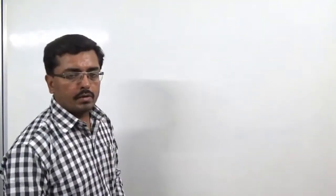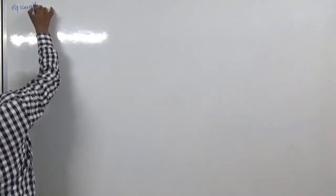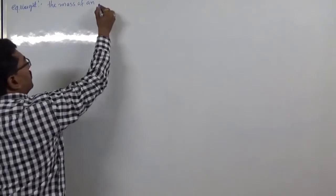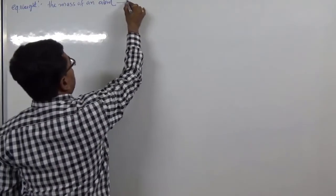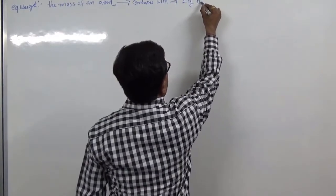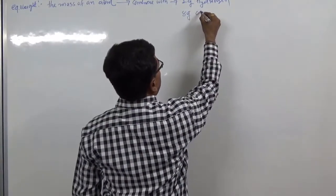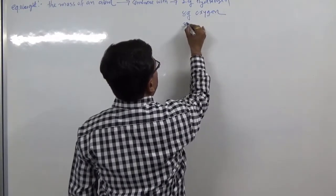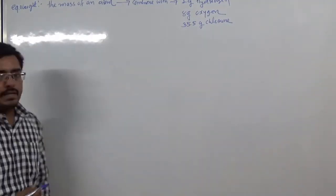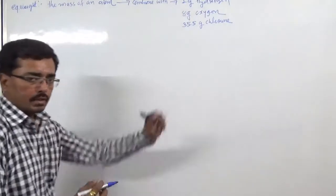Equivalent weight can be defined as the mass of a compound or an element that can combine with one gram of hydrogen, or eight grams of oxygen, or 35.5 grams of chlorine. This is known as equivalent weight, and it represents the combining power of an element with others.